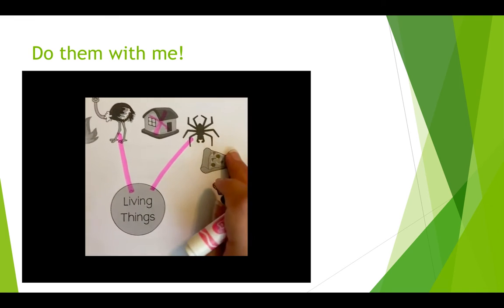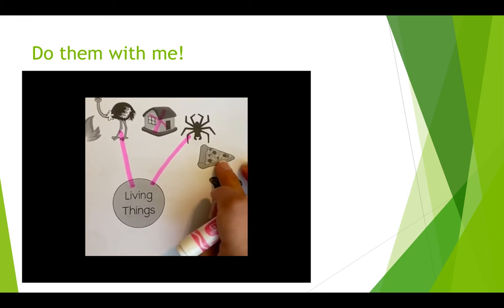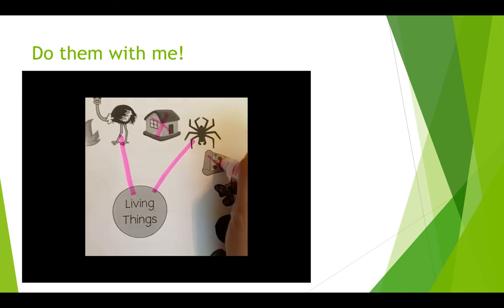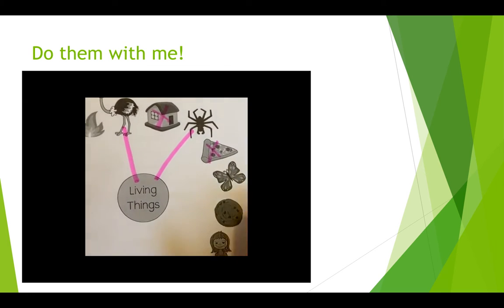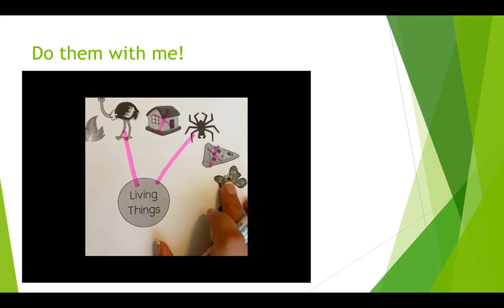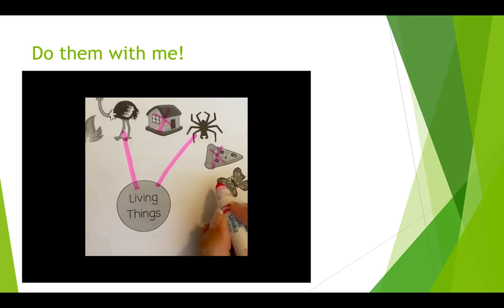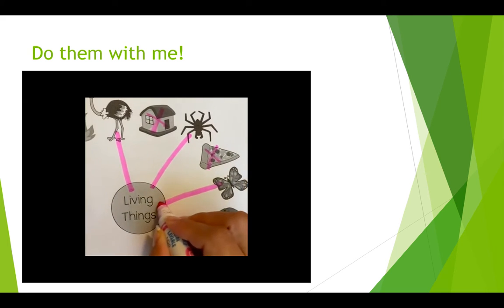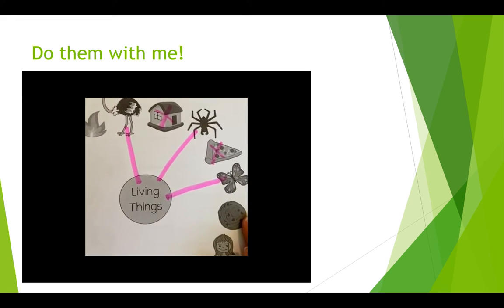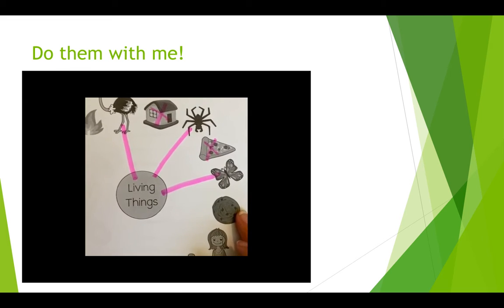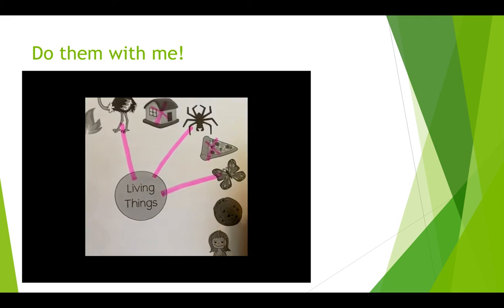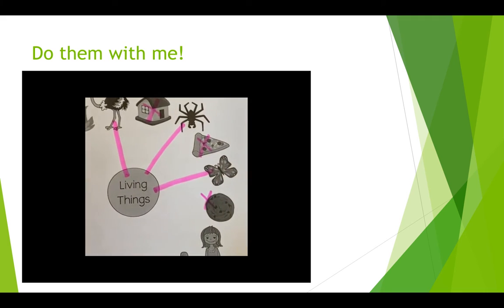And then what about this pizza? Does the pizza eat, move, grow, or reproduce? No. So we put an X on the pizza. What about this butterfly? Yes, a butterfly does eat, breathe, move, grow, and reproduce — it makes more of itself. Then we'll look at this cookie. Do you think the cookie is a living thing? Well, if we said the pizza wasn't, do you think the cookie is? No. So we're going to put an X on Mr. Cookie right here.